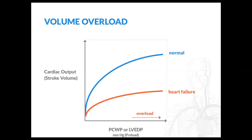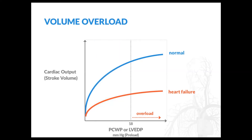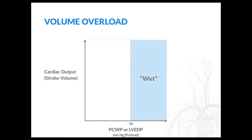This is why optimizing volume status remains a therapeutic goal in patients with heart failure even though it doesn't produce improvements in cardiac output in the vast majority of patients. Volume status can be classified hemodynamically by the pulmonary capillary wedge pressure, which estimates the left ventricular end diastolic pressure or preload. Although a normal wedge pressure is 8 to 12, patients with heart failure often require higher pressures, so a cutoff of less than 18 is generally considered acceptable. Patients with a wedge pressure greater than 18 are classified as wet, whereas those with wedge pressures less than 18 are considered dry.